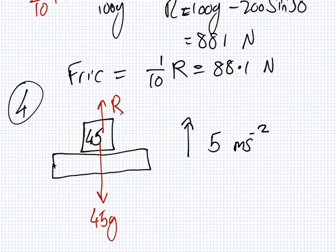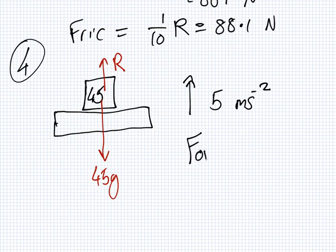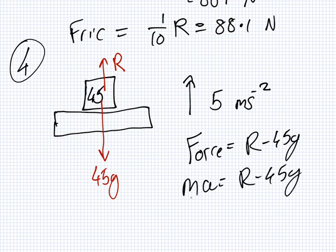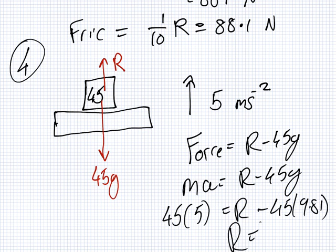Are these forces balanced? Why or why not? Are they equal forces? No, because it's flying off. So, which is bigger? R. So, what is the total force? R minus 45 into G. But, what's Newton's second law telling us about force? What's force equal? F equals MA. So, M is 45. A is 5. R we want. G is 9.81.